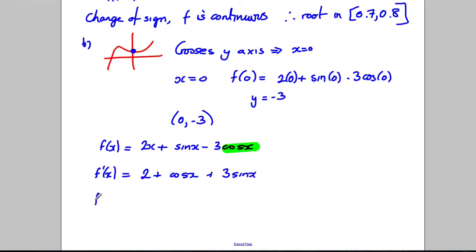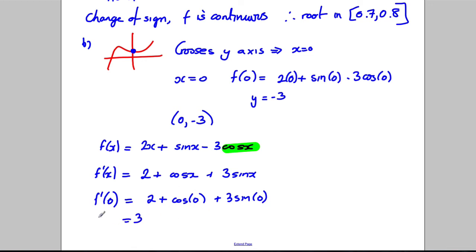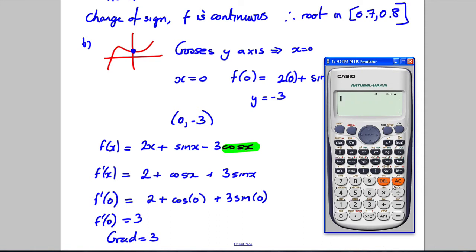We want the gradient at x = 0, so substitute 0: f'(0) = 2 + cos(0) + 3sin(0). Sin(0) is 0, cos(0) is 1, so this equals 2 + 1 + 0 = 3. So f'(0) = 3 and our gradient equals 3. Use the calculator to check you haven't made any silly mistakes.